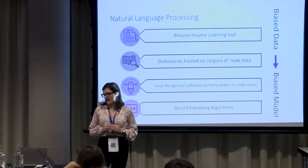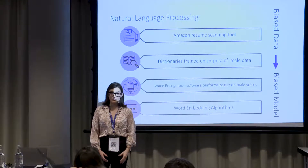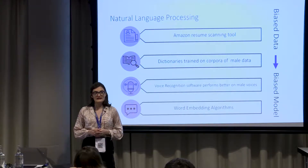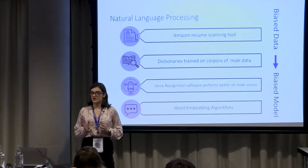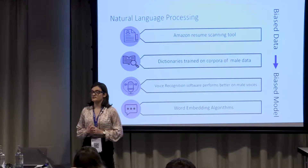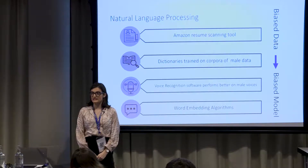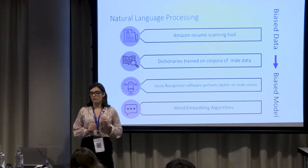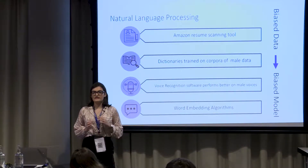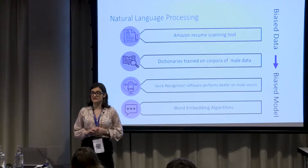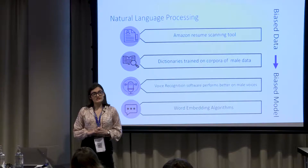Amazon was working with a CV screening tool, but the system began to downgrade CVs that mentioned the applicant being a woman — for example, if they attended an all-female college or were a member of a women's swim team. When engineers revised the system, it still began to discriminate against implicitly gendered words highly correlated with women, such as 'collaborative' or 'supportive.' In the end, Amazon had to scrap the tool because gender discrimination had been built too deeply into it and into Amazon's past hiring practices.